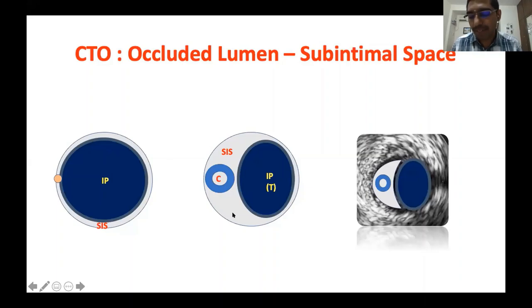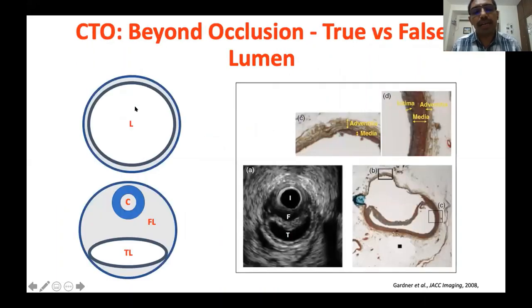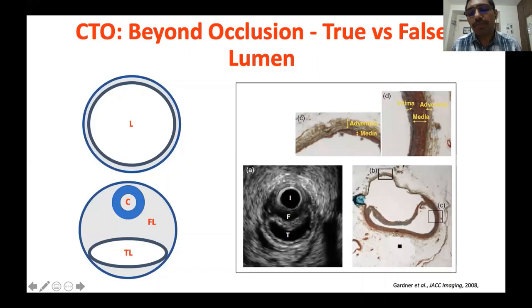Once you cross and go into the distal part, you will either be in the luminal space (true lumen) or in the sub-intimal space (false lumen) — the false lumen exists because there is an occlusion with no lumen. Once you enter the false lumen, the true lumen collapses to form a crescent-shaped structure. To differentiate true from false: the true lumen is a three-layer structure — intima, media, and adventitia. The false lumen is a single-layer structure. Your IVUS catheter in the false lumen confirms this.